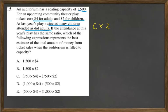Let's look at choice A: 1,500 times 4. Well, adults are $4. Are all of the seats adults? No, there's twice as many children.